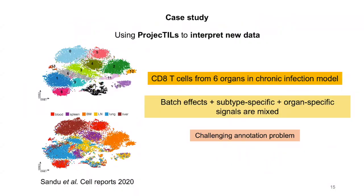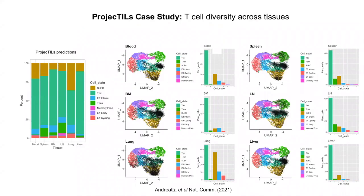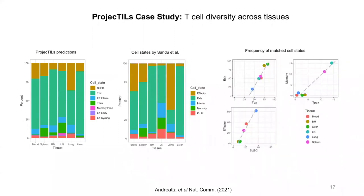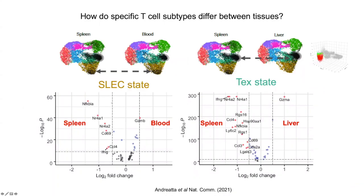In their paper from 2020, Sandhu and colleagues studied the diversity of CD8 cells in chronic viral infection across six different organs. This is a particularly challenging dataset to annotate and interpret using a typical unsupervised approach because batch effects are mixed together with cell subtype-specific variation and with organ-specific variation. However, by projecting this data onto our reference atlas, Projectiles can easily identify the subtypes across organs and batches. And these automated classifications accurately match those generated by the experts in their original study.